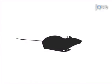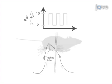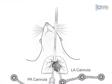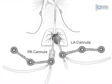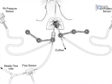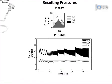To study pulsatile pulmonary pressure flow relationships, this protocol explains how to isolate, ventilate, and perfuse mouse lungs. The trachea is surgically exposed for ventilation, then the heart and lungs are isolated so that the pulmonary artery and left atrium can be cannulated. The pulmonary system is then perfused. Experiments are performed by altering pulmonary artery flow magnitude, waveform, and/or frequency. The resulting pulmonary artery and left atrial pressure waveforms are recorded, demonstrating the pulsatile pulmonary pressure flow relationships.